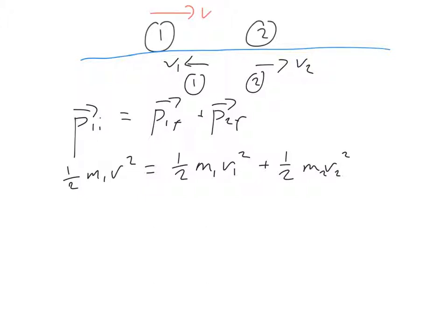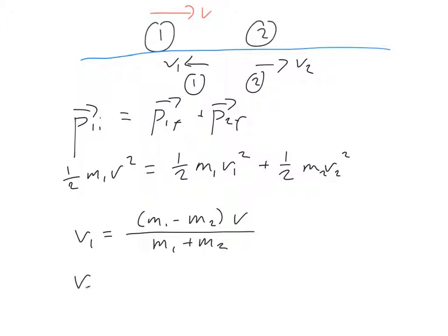When we do the algebra for this particular setup, assuming that object 2 is at rest before the collision, we can find that the velocity of object 1 after is (m₁ − m₂)/(m₁ + m₂) times the original velocity. And velocity 2 — the object that was originally at rest — is going to be 2m₁/(m₁ + m₂) times the original velocity.